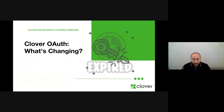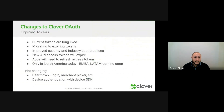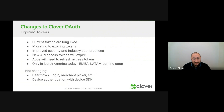So what's changing with Clover OAuth? The main change is that we're going to switch to expiring tokens. Our access tokens do not expire currently, so we are migrating to expiring tokens to improve security and to follow industry best practices. The new API access tokens will expire, and apps will need to refresh them using a refresh token. Note that this is only in North America today, and EMEA and Latin America are coming soon.